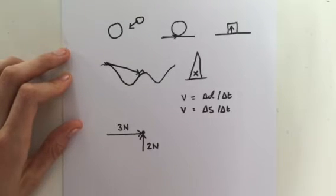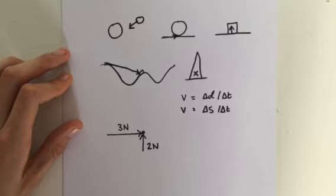When adding vector quantities, both the size and direction have to be taken into account. What is the sum of a two newton force and a three newton force acting on the same object? The answer could be any value between one newton and five newton, depending on the directions involved. Because if the two newton force is acting in the opposite direction to the three newton force, then you do three plus minus two, which is of course one newton. If they're both acting in the same direction, then you do three newtons plus two newtons, which is equal to five newtons.